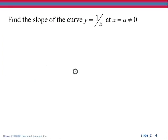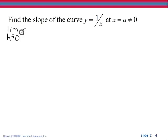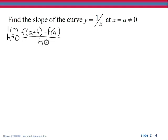Now let's take the curve y equals 1 over x and find the slope of the curve at x equals a, where a is not 0. A could not be 0 or our function would be undefined. So we're going to look at the limit as h approaches 0 of f(a + h) minus f(a) divided by h, where we have replaced x₀ with a, since a is the x value we're looking at.